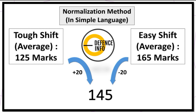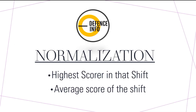In simple terms: say for a tough shift the average score is 125, and for the easiest shift the average is 165 marks. The midpoint between 125 and 165 is 145. So a candidate scoring 125 would get 20 grace marks added, while a candidate scoring 165 would get 20 marks deducted to normalize their score. The full formula is available on the CDAC FCAT website, though it is quite complicated.